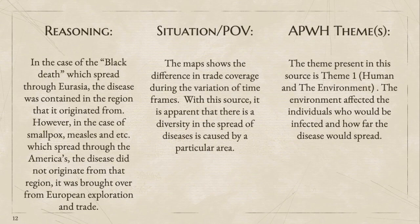The map demonstrates the differences in surface area covered by the disease. The first map shows how in the 16th century the disease was able to spread from one continent to another due to water transportation. However, the second map shows how the disease stayed in one area because its carriers did not have the means to move around. The theme presented in this scenario is Theme 1: humans and the environment. The environment affected the individuals who would be infected and how far the disease was able to spread.